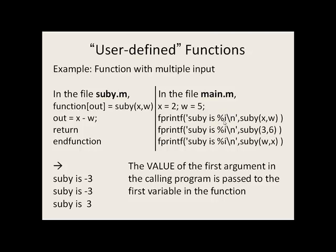What gets put in the percent i place will be the value of subby when the first argument is 2, because x is 2, and the second argument is 5 because w is 5. The first argument x, or 2, gets passed into x in the function. So the value 2 gets passed into the variable x in the function, and 5 gets passed into w. 2 minus 5 is negative 3, and that gets returned to the main program and printed on the screen: subby is negative 3.